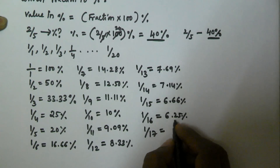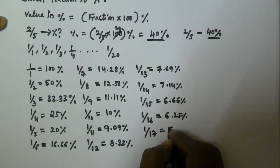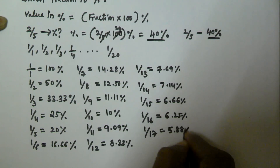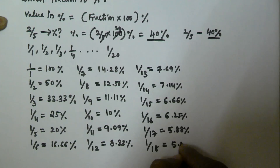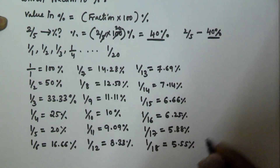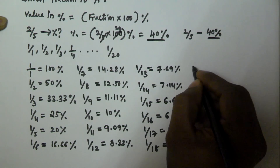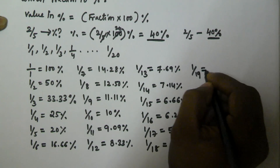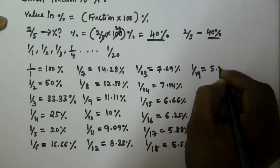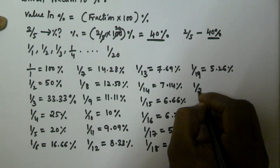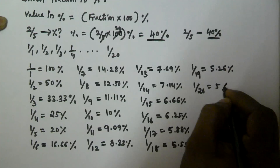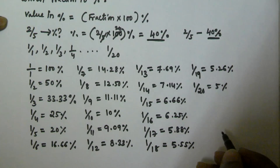1/16 is equivalent to 6.25%, 1/17 is equivalent to 5.88%, 1/18 is equivalent to 5.55%, 1/19 is equivalent to 5.26%, and 1/20 is equivalent to 5%. So to solve percentage problems you have to remember all these percentages and their corresponding fraction values.